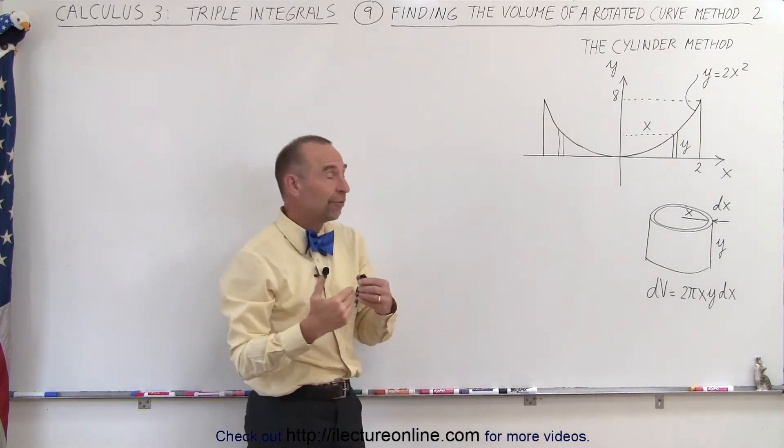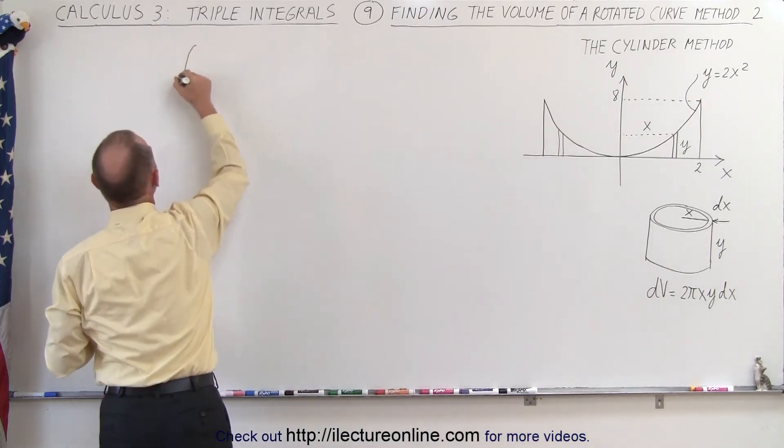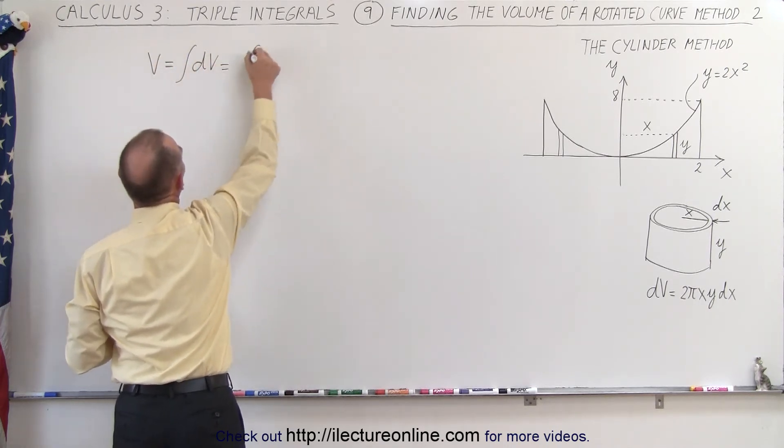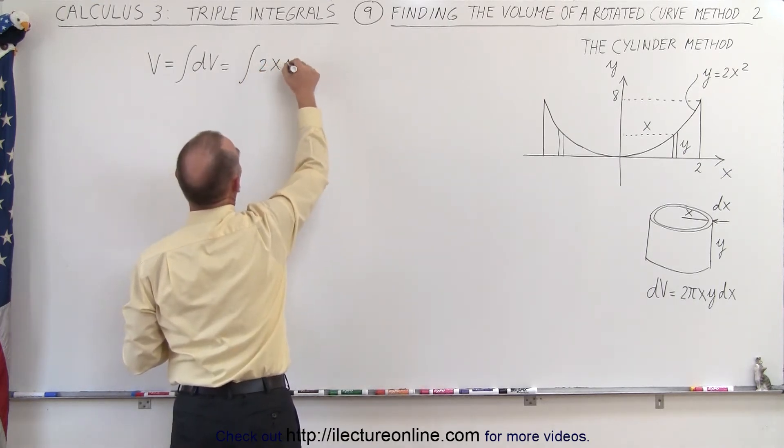And so, if we want to find the total volume, what we would do, we would simply integrate, so the volume would be equal to the single integral of the dv, which is equal to the single integral of 2 pi x y.